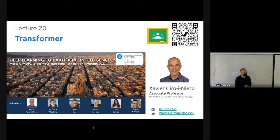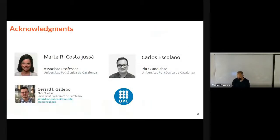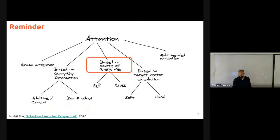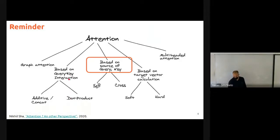So after having seen the topic of attention mechanisms, now we will see some applications to probably one of the most influential architectures nowadays, which is the Transformer. Acknowledgements to Marta, Gerard and Carlos Colano from the machine translation group here at UBC. As a reminder, here are three ways of classifying attention mechanisms. Before, we explained the difference between additive or concatenated attention, dot product, and scaled dot product.